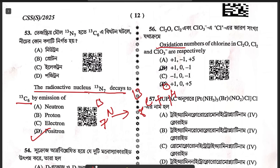Question 56: the oxidation number of chlorine in Cl₂O, Cl₂, and ClO₃⁻. In Cl₂O it is +1, in Cl₂ it is 0, and in ClO₃⁻ it is +5. So option D.